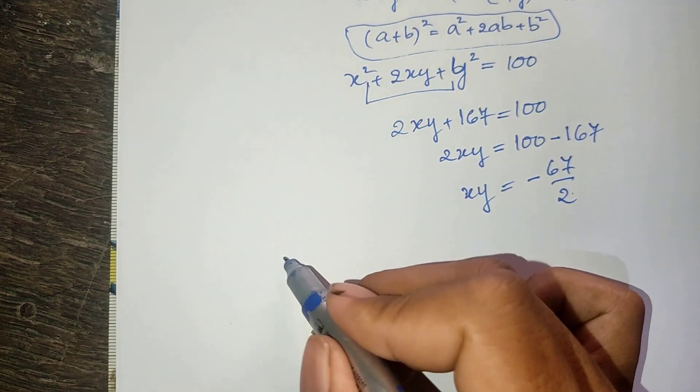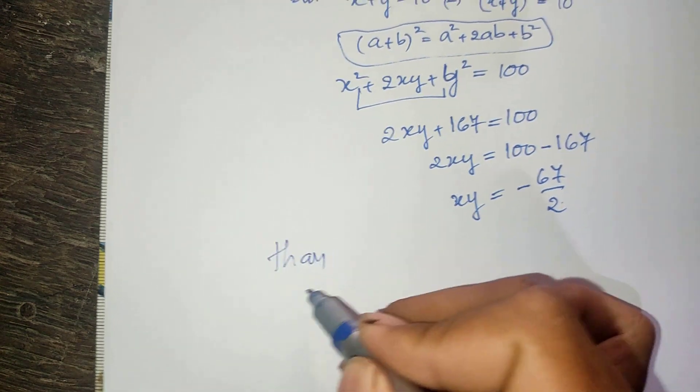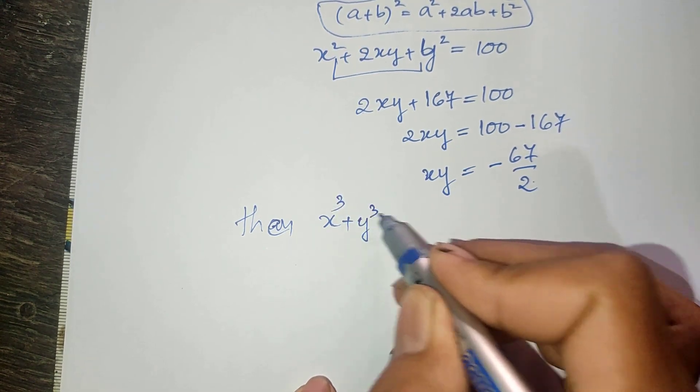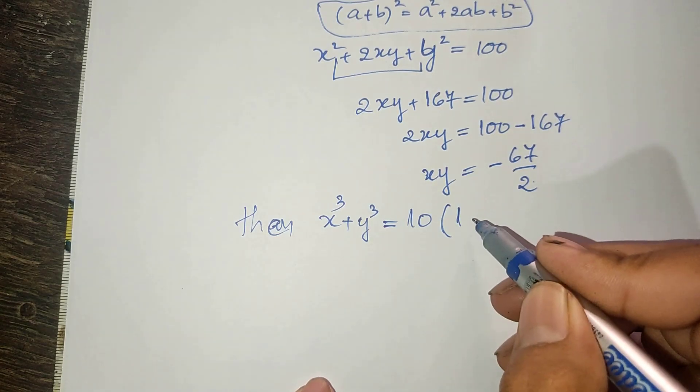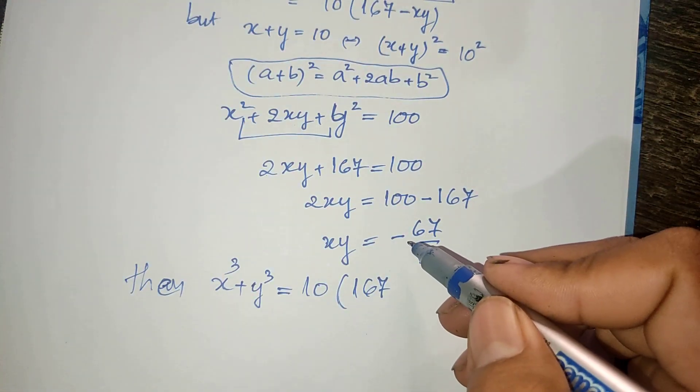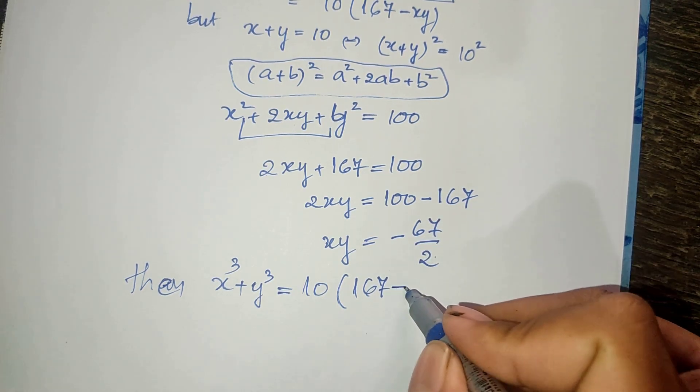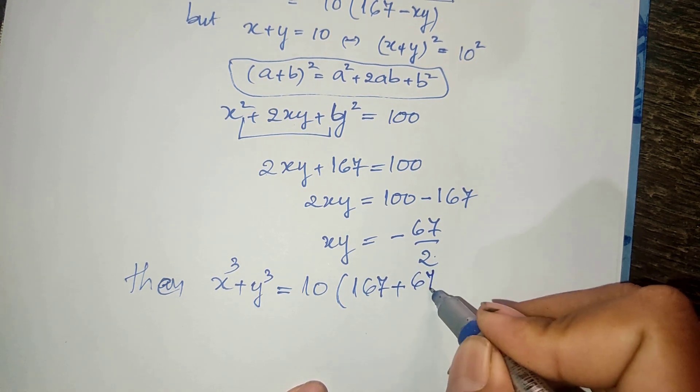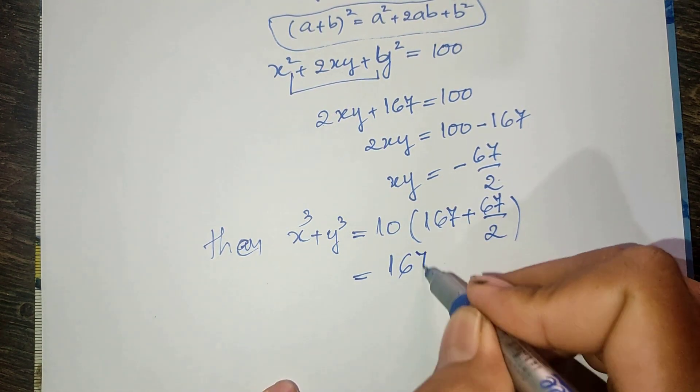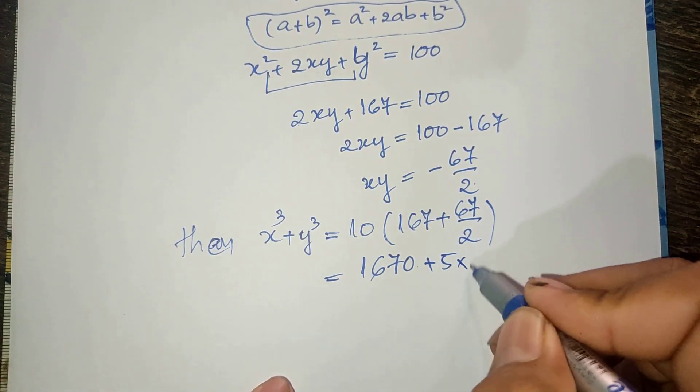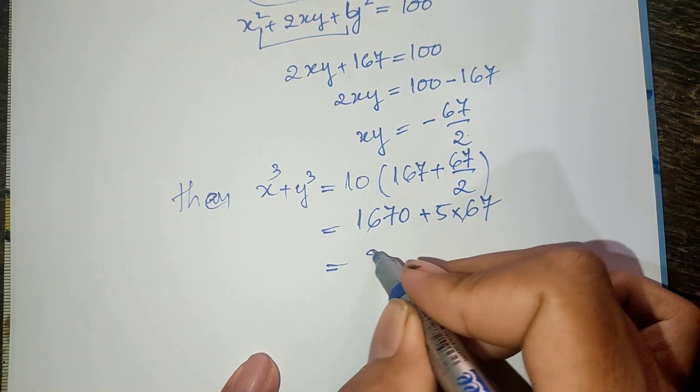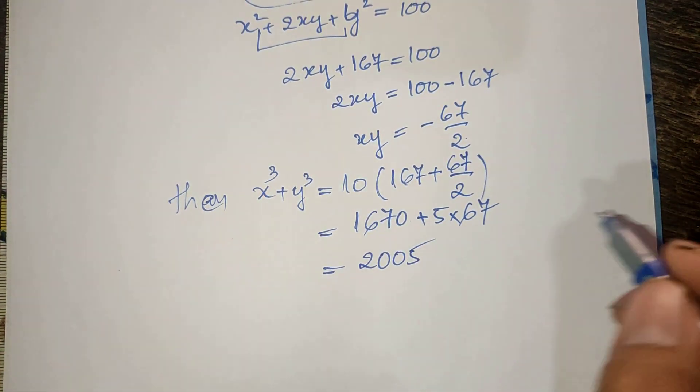Now we substitute. x power 3 plus y power 3 equals 10 and multiply 167 minus minus—when we multiply minus times minus we get plus—plus 67 divided by 2. When we multiply this, we get 1670 plus 335, and this equals 2005.